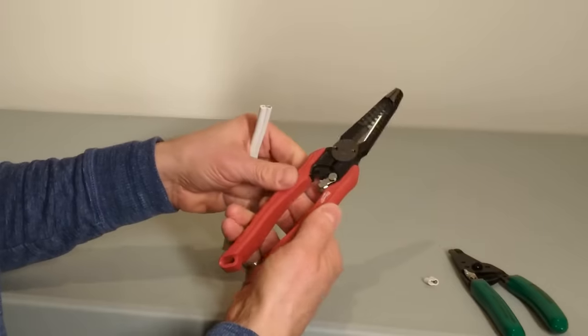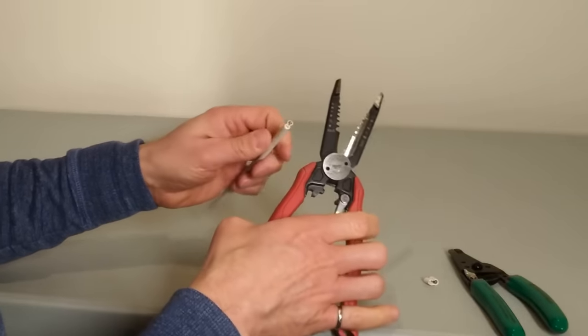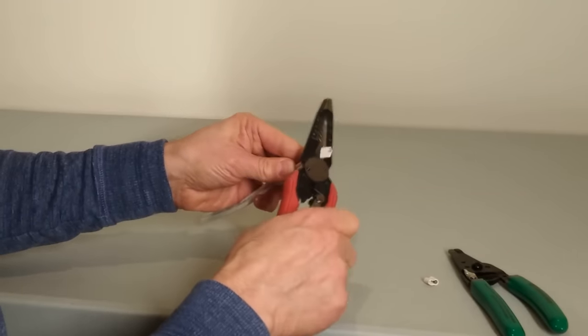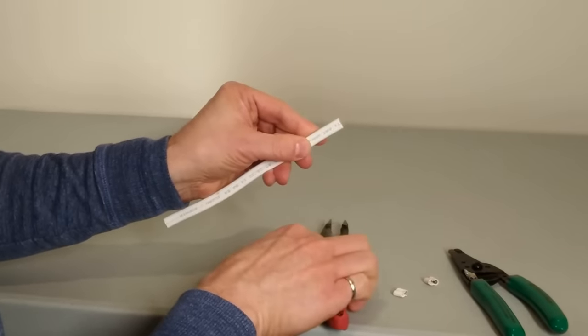This is my Milwaukee six-in-one electrician's pliers, and you'll notice its cutter is much bigger and can easily cut the Romex for a clean cut.